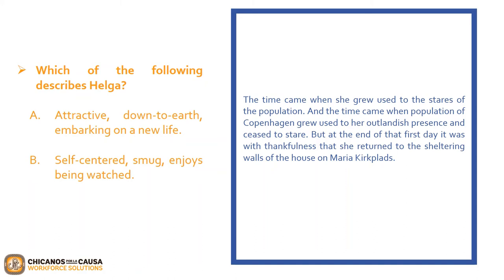Now that we have read example three, let's go over the following questions. The first question asks: which of the following describes Helga? A, attractive, down to earth, embarking on a new life? Or B, self-centered, smug, enjoys being watched? If you selected A, attractive, down to earth, embarking on a new life, you are correct. An artist is painting her, suggesting she's attractive. Yet she prefers not to be the center of attention, as shown at the end of the last paragraph.